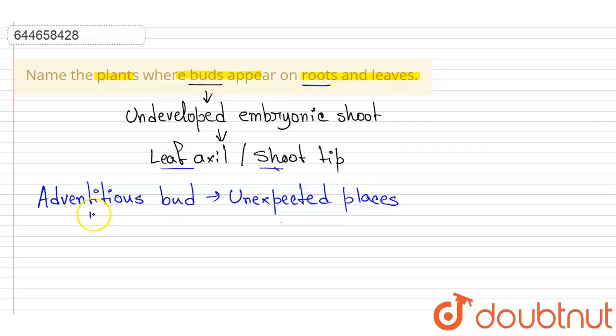The adventitious buds that grow on the roots are known as radical, and an example of such radical will be Trichosanthes.